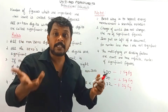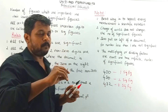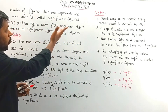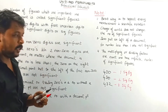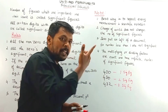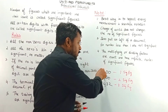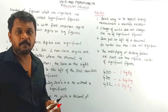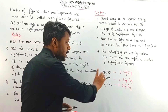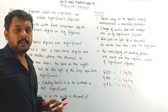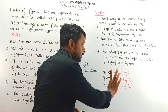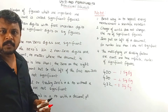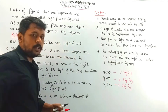So what is the definition of significant figures? The number of figures which are important and their count. Here, 4 is very important and the count is 1, so 1 is the significant figure. In the second case, the count is 2, so 2 is the significant figure. In the third case, the count is 3, so 3 is the significant figure.